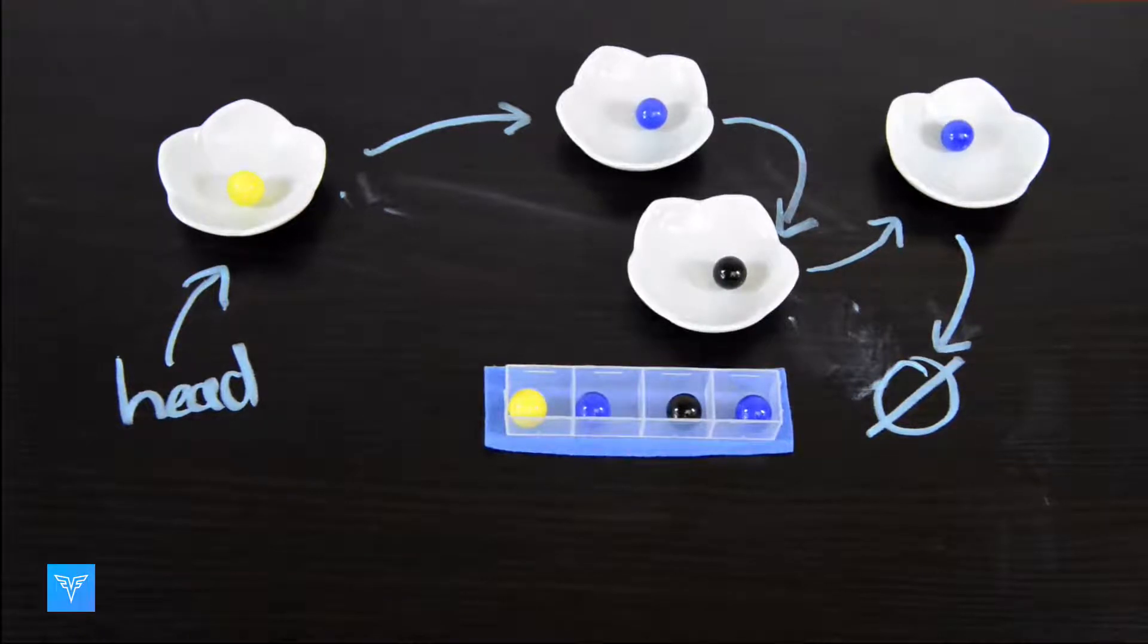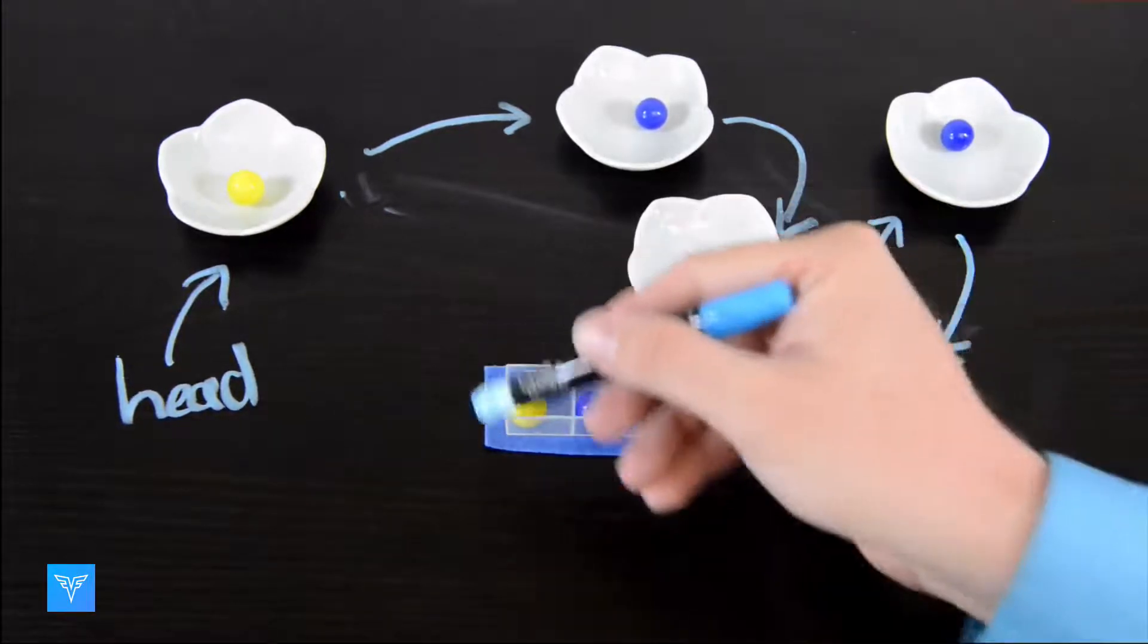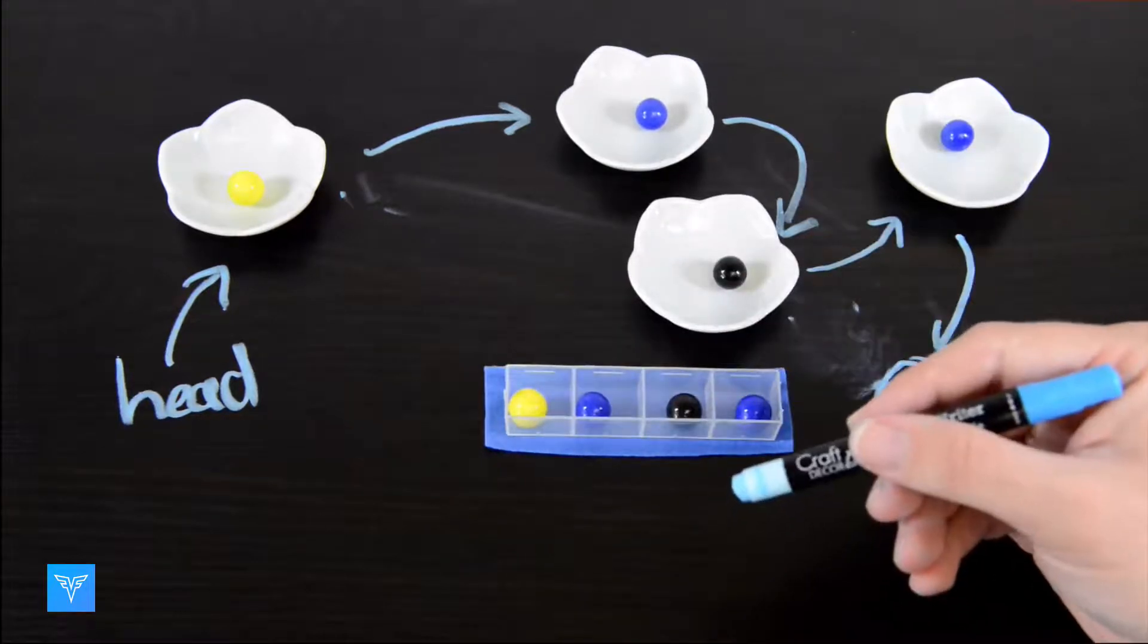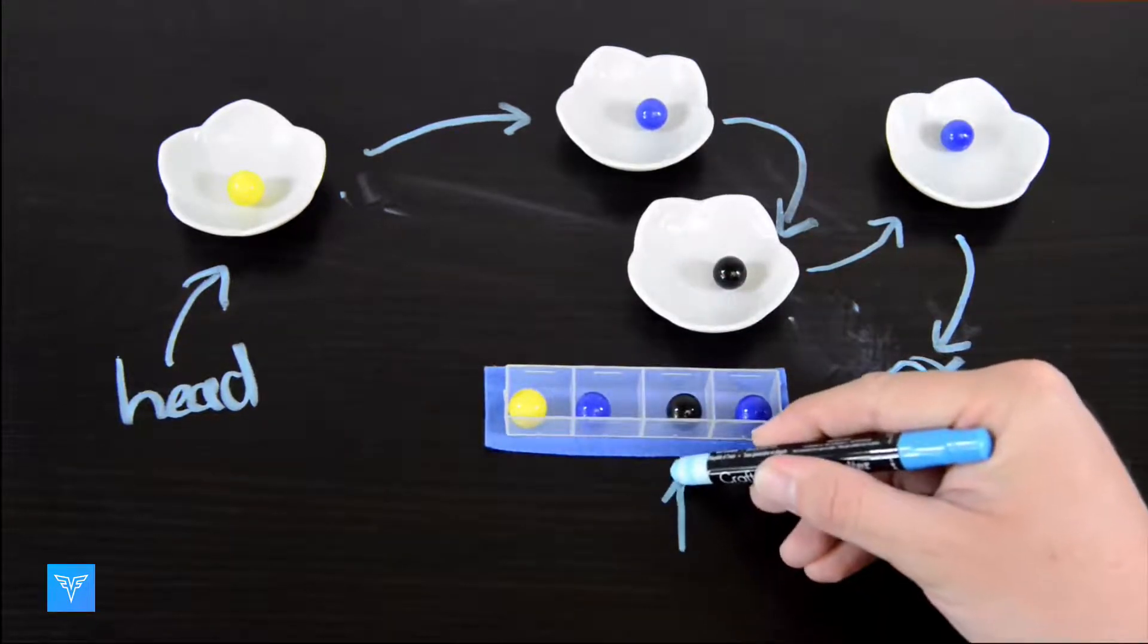Arrays have their advantages as well. For example, if we wanted to access the third element of our array, because we know what size each box is, we know exactly where the third element is.